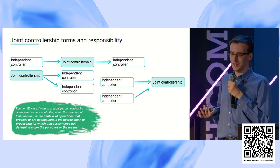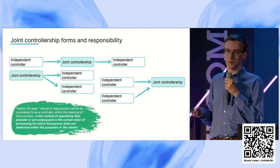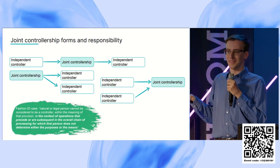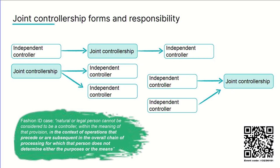Forms can be very different, and it's a relatively common misconception that joint controllership means that from start to end — from collection of data to deletion — you are joint controllers. That's not the case at all. Different controllers can interact in different situations, and only one small part of that interaction can constitute joint controllership.